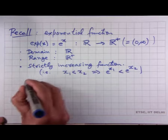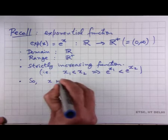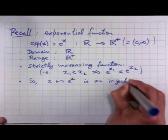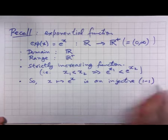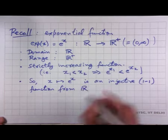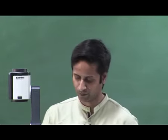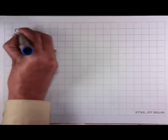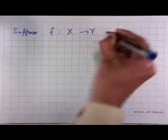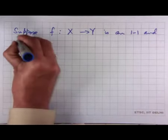From this it follows that the function x going to e to the x is an injective, also called one-to-one, function from the set of real numbers onto the set of positive real numbers. Now, suppose f is any function from some set X to Y that is one-to-one and onto.